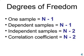The degrees of freedom tell us what row to look at on the t-table. For one-sample and dependent samples designs, we look at the sample size minus 1 for our degrees of freedom. For independent samples and correlation designs, the degrees of freedom is n minus 2.